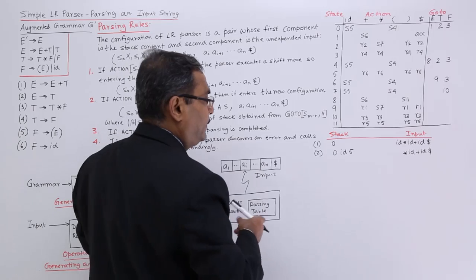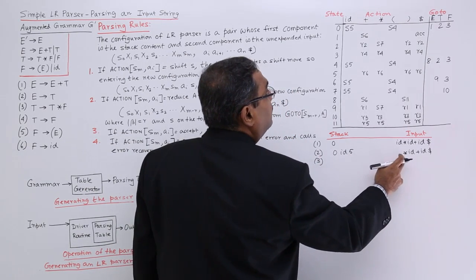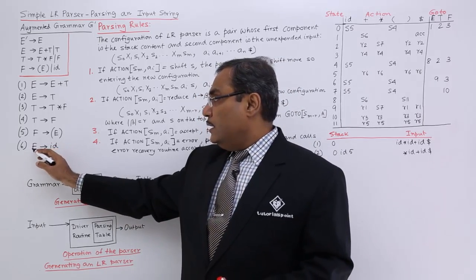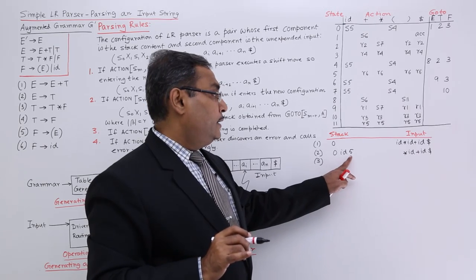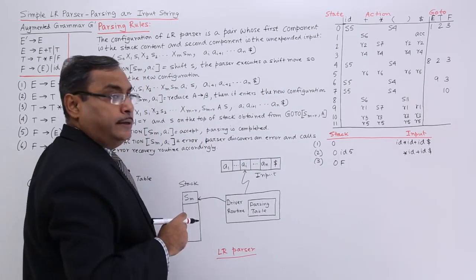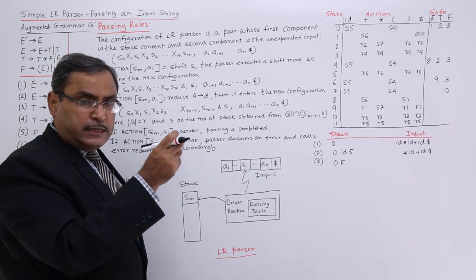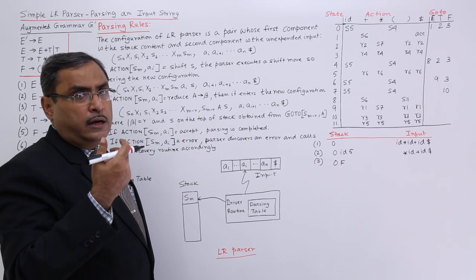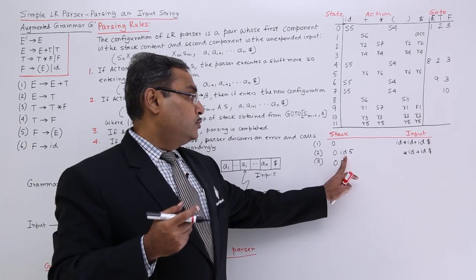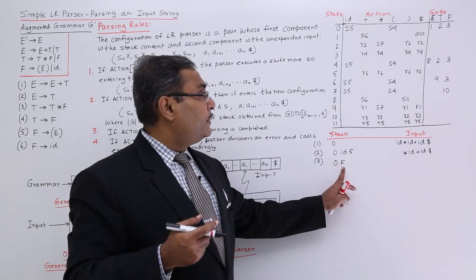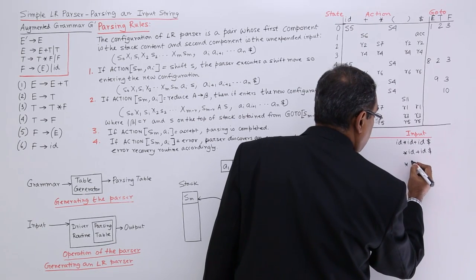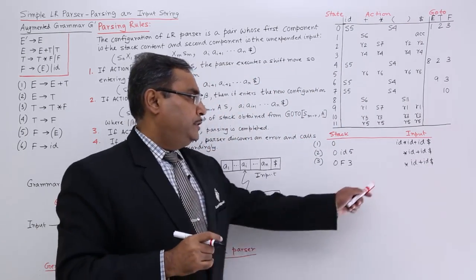Step 3: action[5, star] is r6, meaning reduce by rule 6: f → id. Since the right-hand side has one symbol, we pop 2 elements (one state, one grammar symbol: id and 5). Now goto[0, f] is 3, so we push f and state 3. The unexpended input remains 'star id plus id dollar'. Step 4: action[3, star] is reduce 4, which is t → f. We pop 2 elements (f and 3), then goto[0, t] = 2, so we push t and state 2.